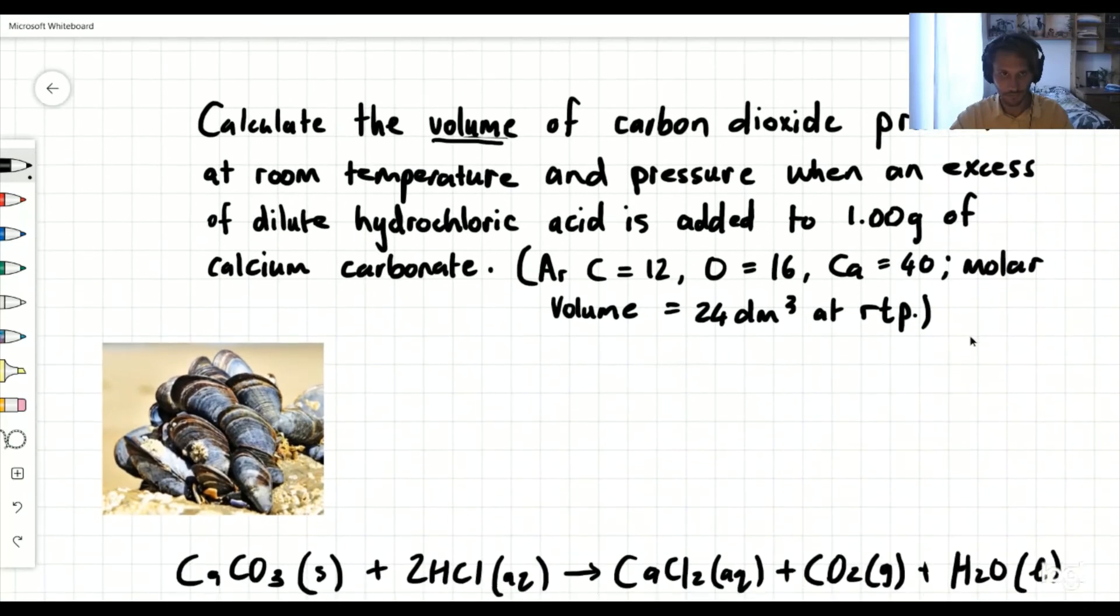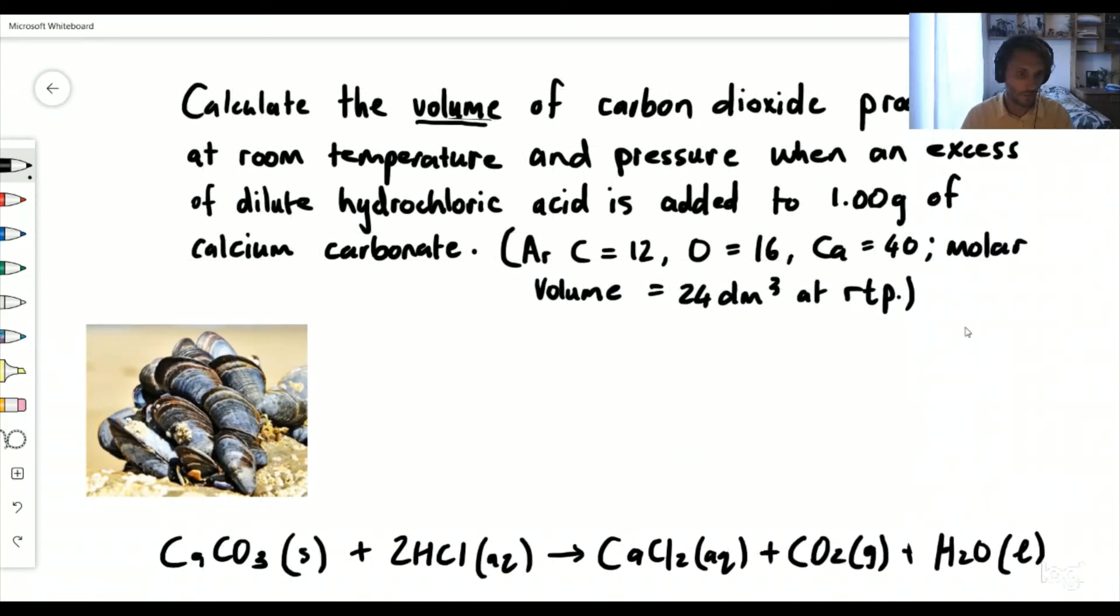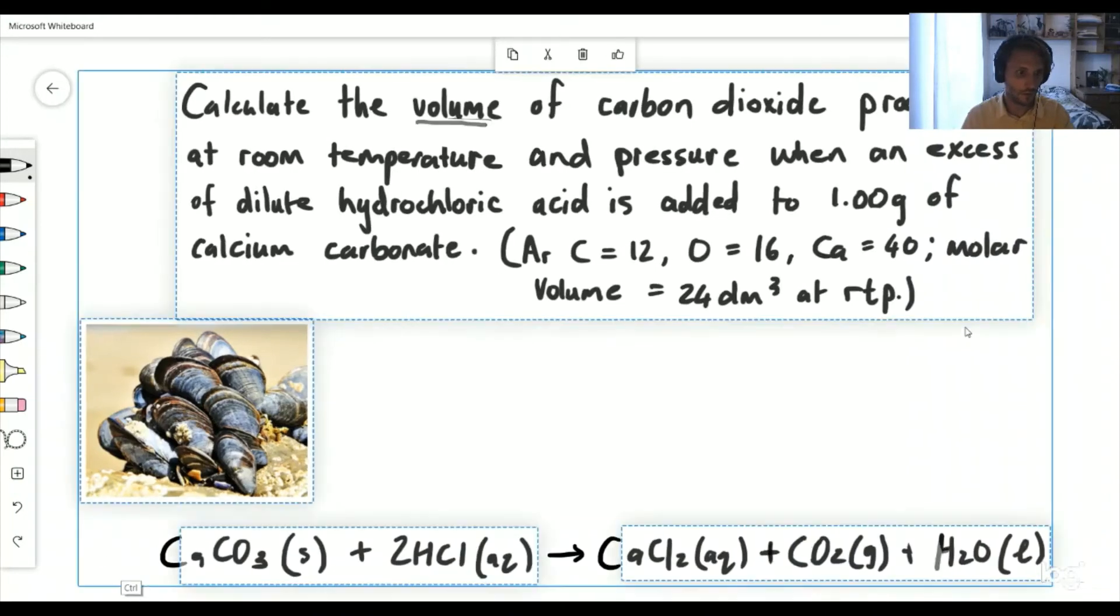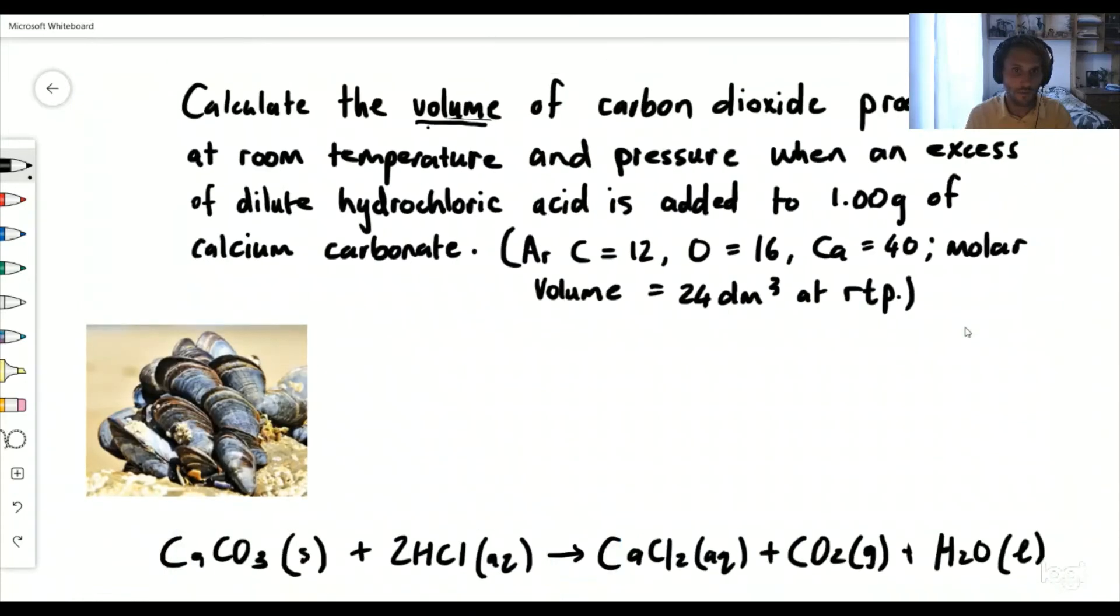Let's do one more question, a little bit more tricky now. We've got an equation at the bottom here, and we've got some information from that equation. It says calculate the volume—my final answer is going to be in decimeters cubed—of carbon dioxide. Here it is in the equation, produced at room temperature and pressure. So RTP, we know that one mole of CO2 already is equal to 24 decimeters cubed, but we are definitely not going to be working with one mole here.